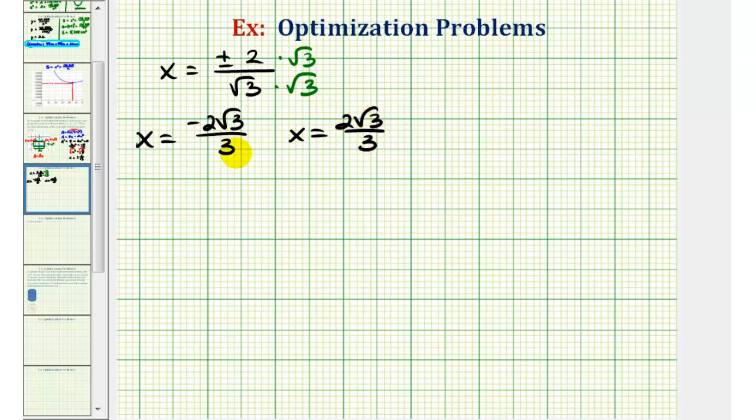So again, because we know x can't be negative, it probably would be correct to assume this x value will maximize the area. But just to be sure, let's go ahead and use the second derivative test.